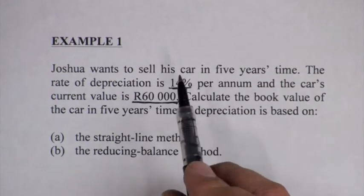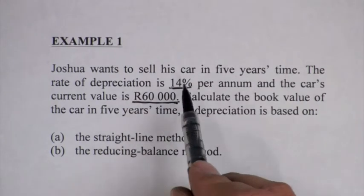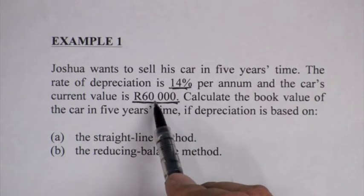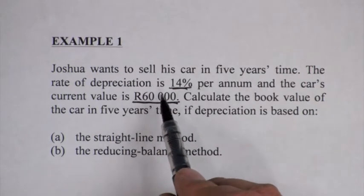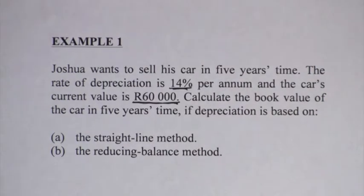What do you need to remember? Your interest rate, or rather your rate of depreciation, is now 14% per annum, and the current value of the car is 60,000. What will the book value be in five years? Let's discuss this problem. First of all, let's discuss the formulas for these two methods.